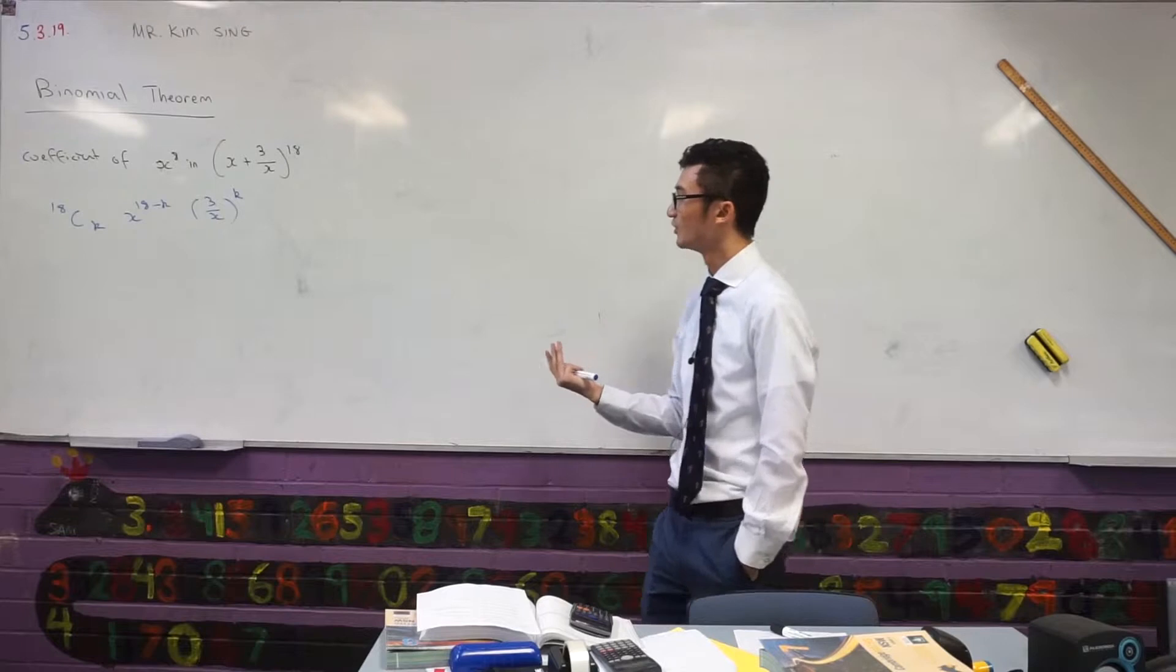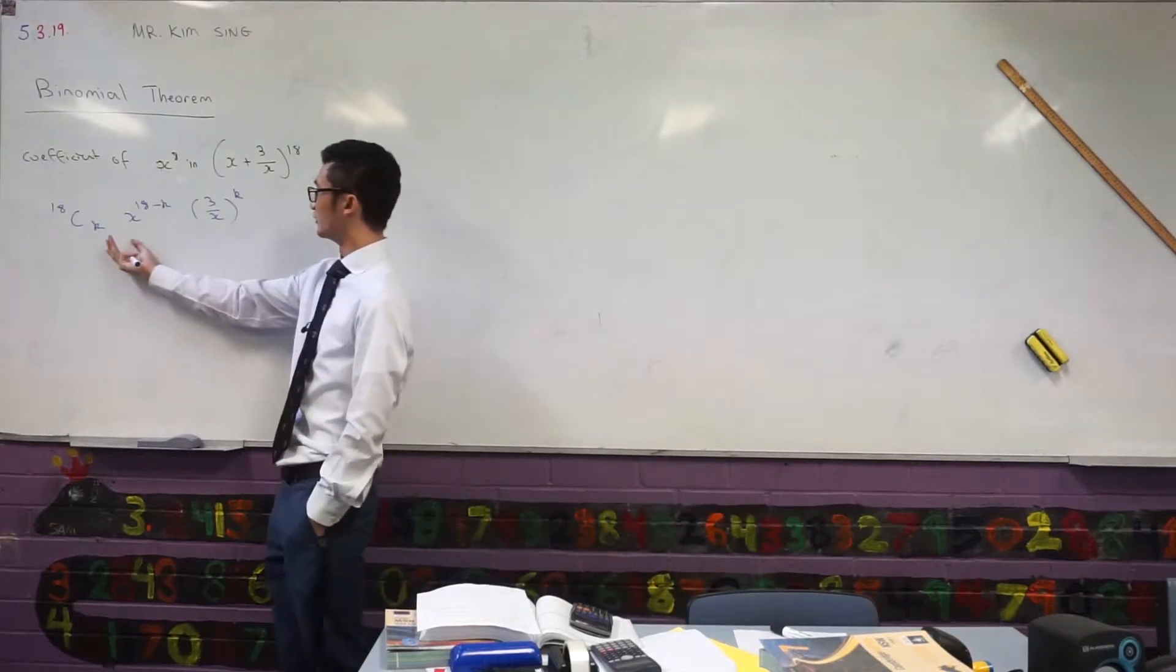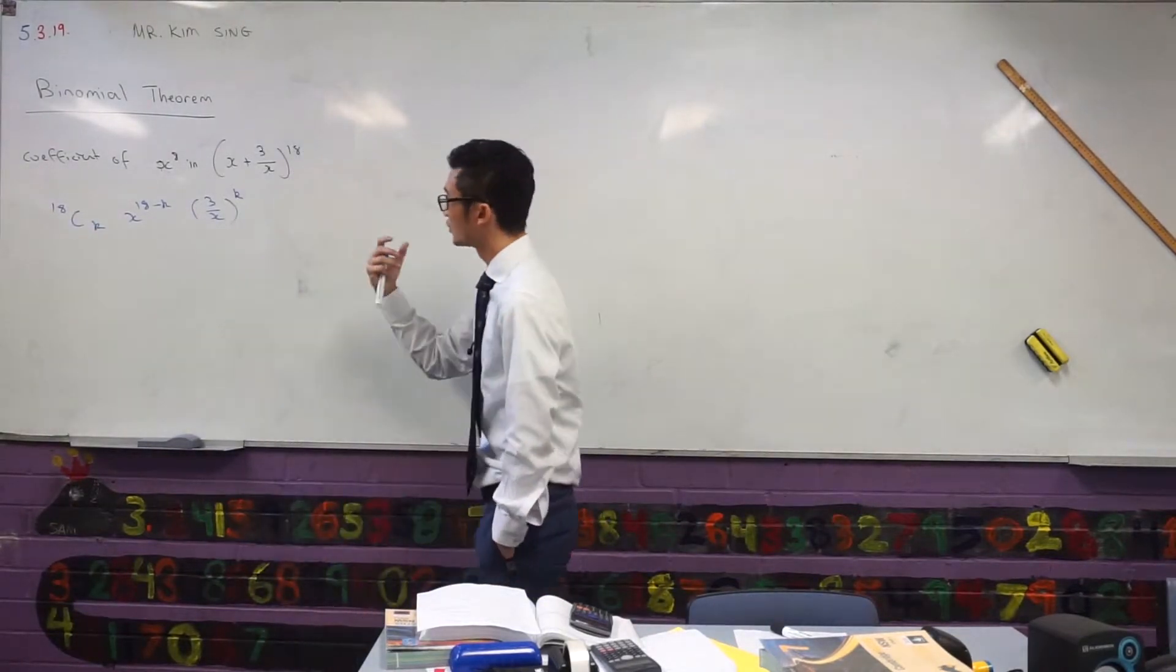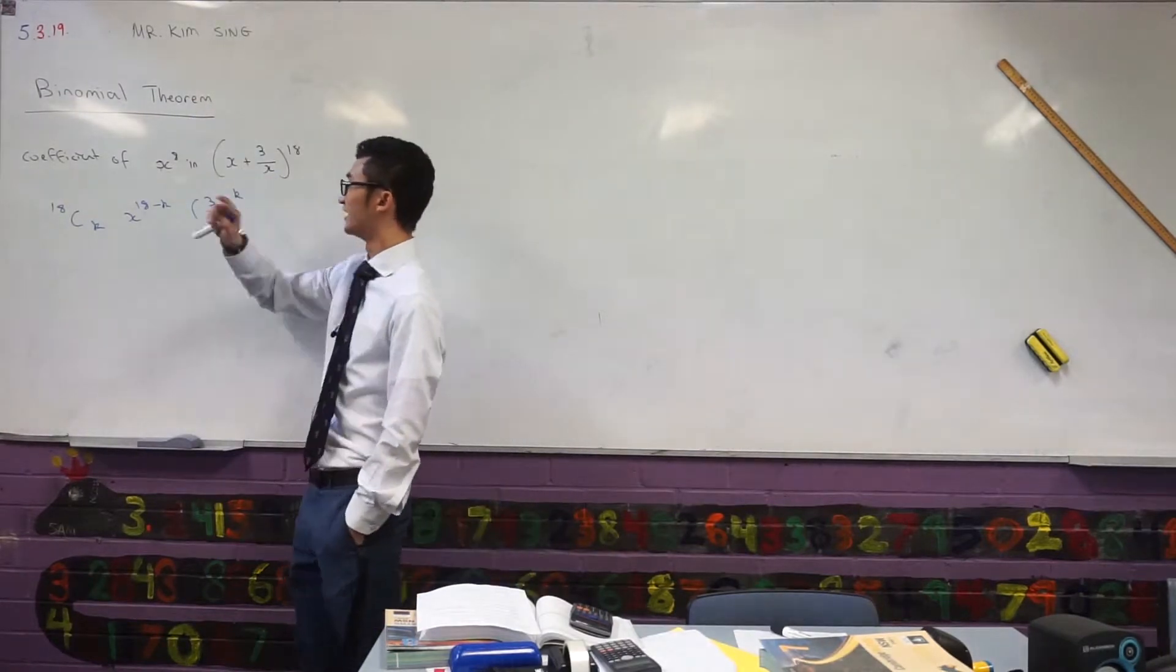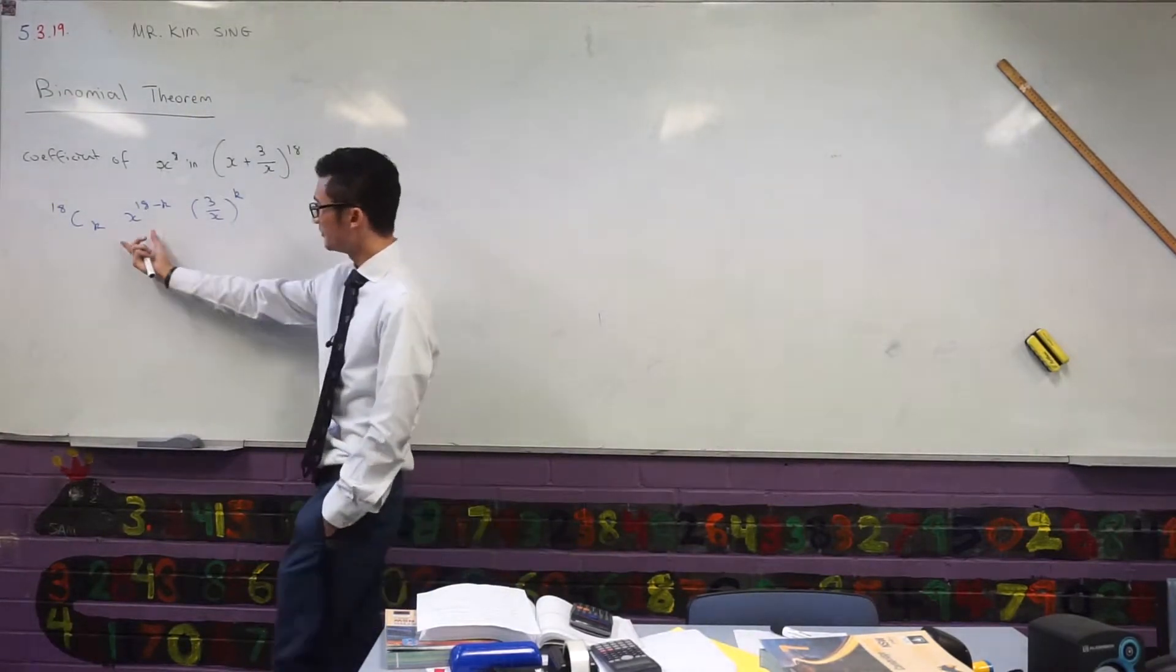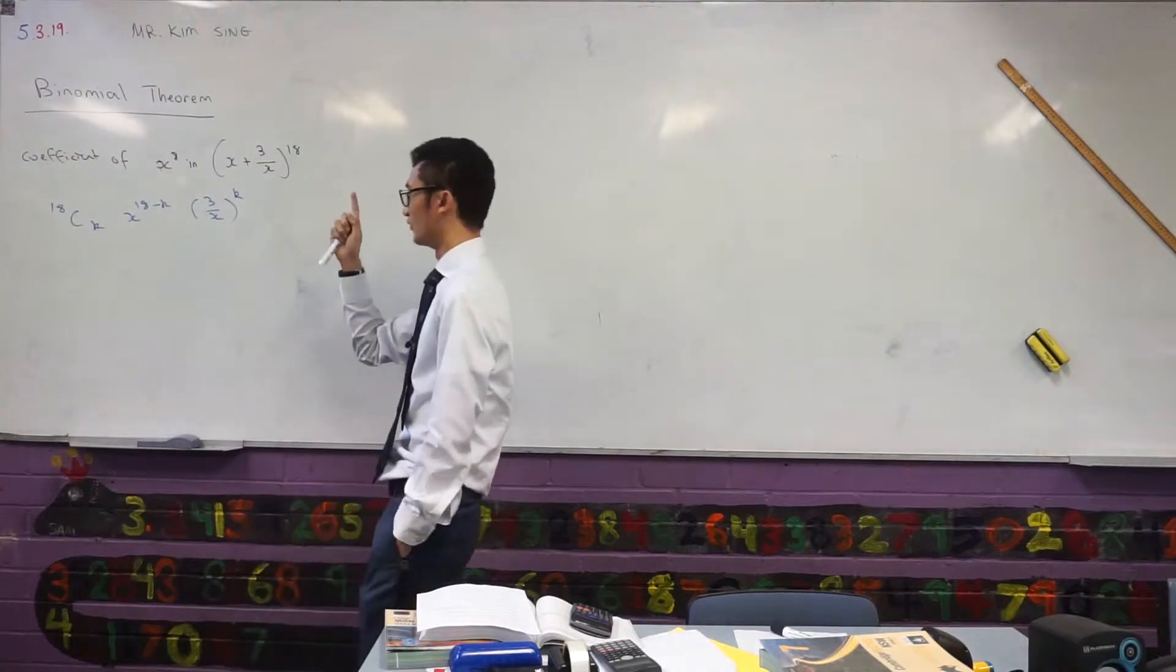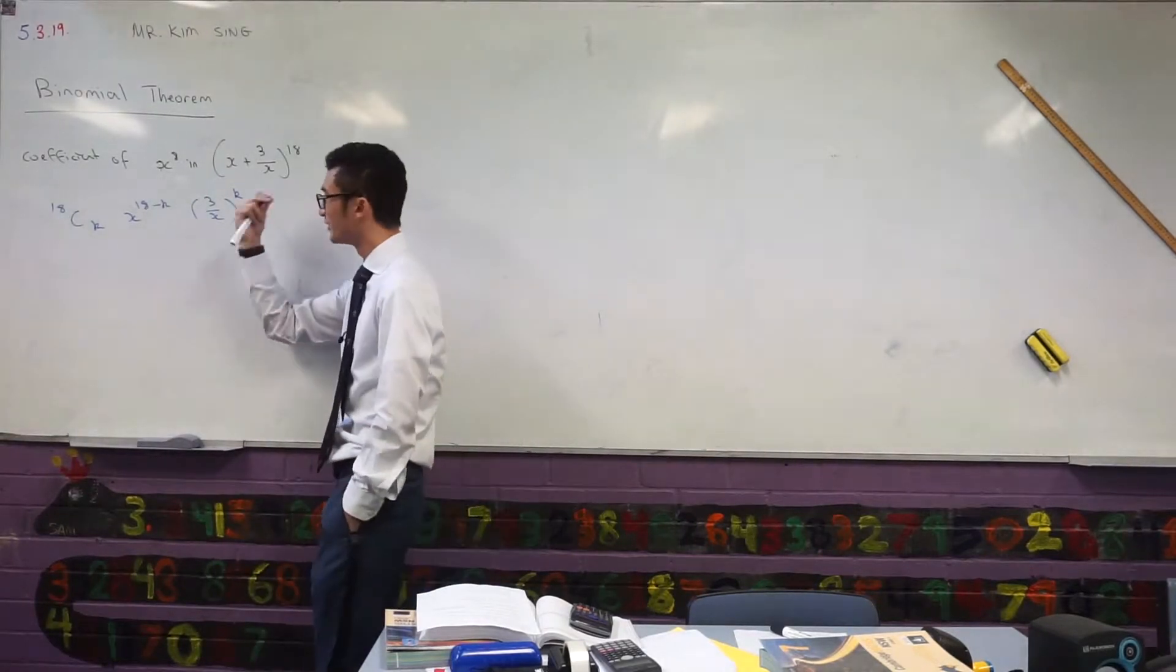So what do we need to do? We need to have a think. What should I do in order to have a simpler expression so that I can see what value of k I need to get x to power 8? Remember these are just multiplied together. So I'm thinking back and forth. Okay, how can I bring these together?